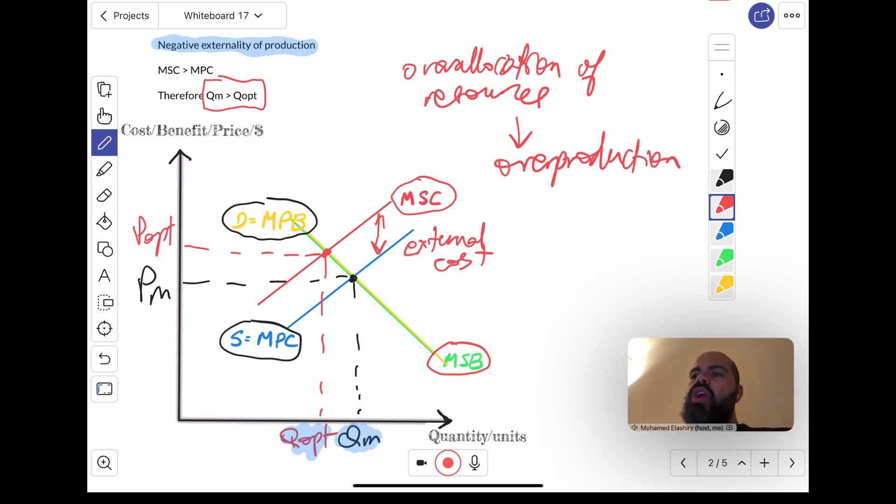There is more of this product being produced than there should be. There is more being produced of this product than there should be from society's point of view, from the optimal allocation of resources from society's point of view. The horizontal distance between QM and QOpt is the amount of over-production. And the vertical distance between MSC and MPC is the external cost.